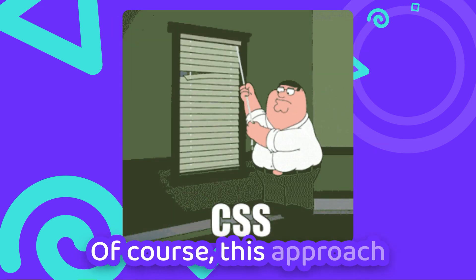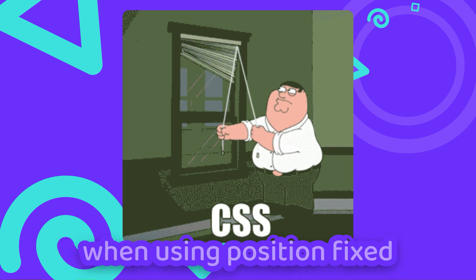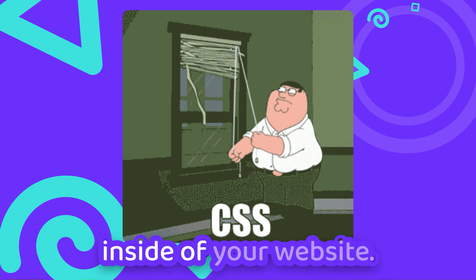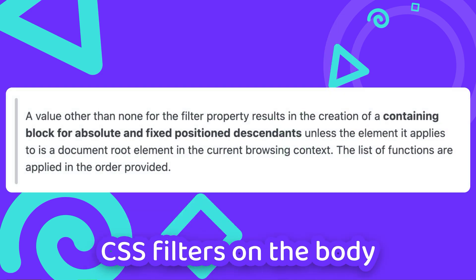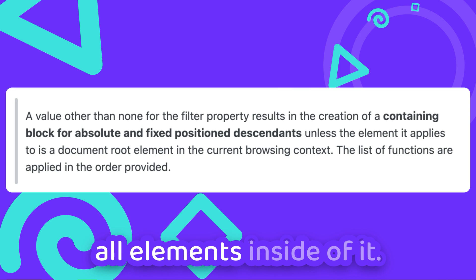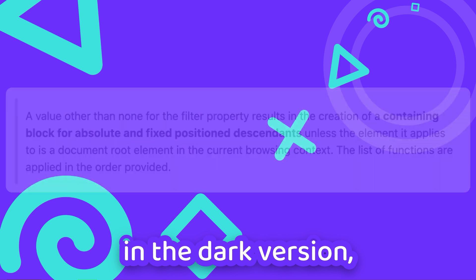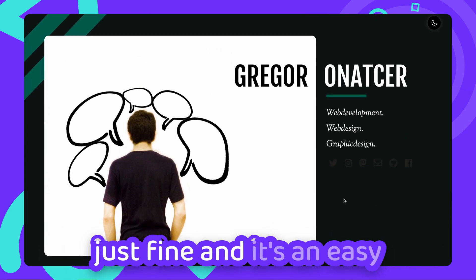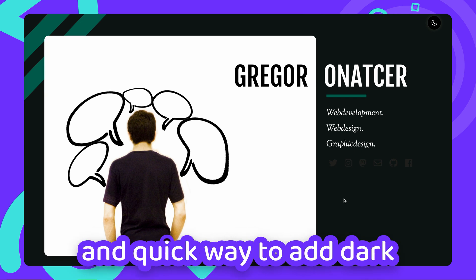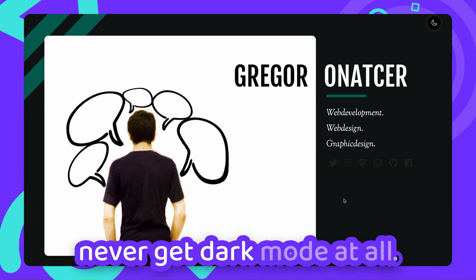Of course, this approach comes with a few caveats — most notably inconsistencies when using position fixed inside of your website, because the way we use CSS filters on the body resets the context for all elements inside of it. Also, contrasts are not guaranteed to work in the dark version. But for most simple websites, this approach should work just fine, and it's an easy and quick way to add dark mode to websites that would otherwise probably never get dark mode at all.